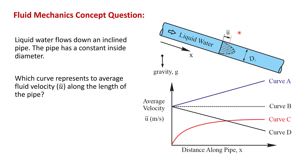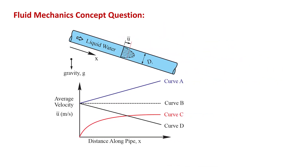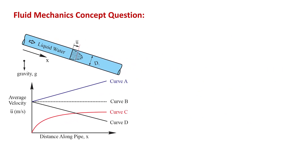I've shown a sketch here of the average velocity. Does the average velocity increase along the pipe, stay constant, decrease linearly along the pipe, or increase non-linearly along the pipe? If you've done some problems involving pipe flow in chapter 3, you should be able to answer this question. You might want to pause the video here and think about it.